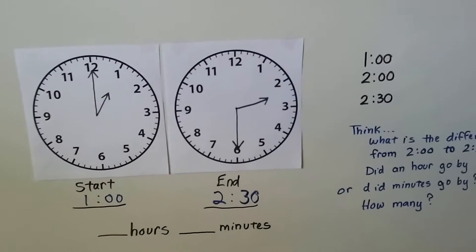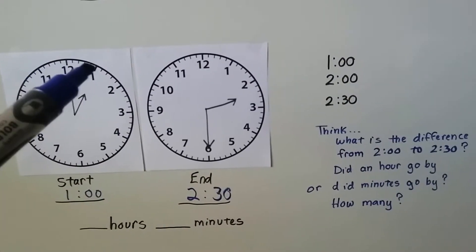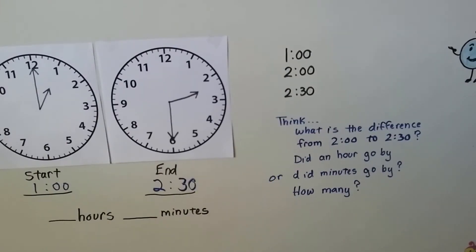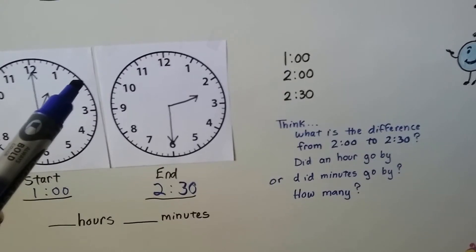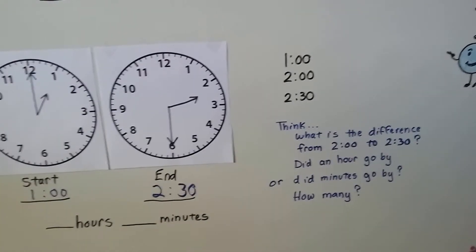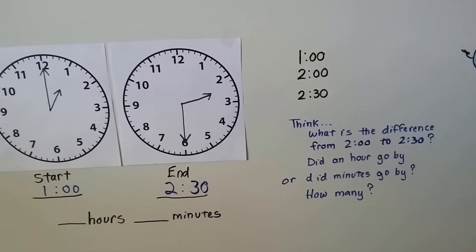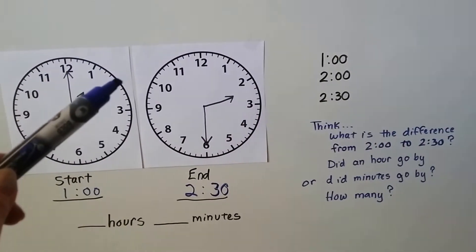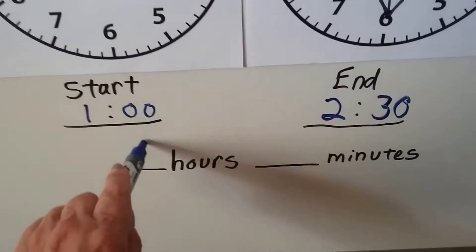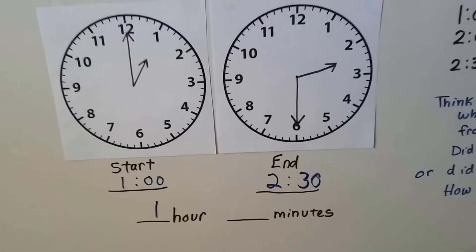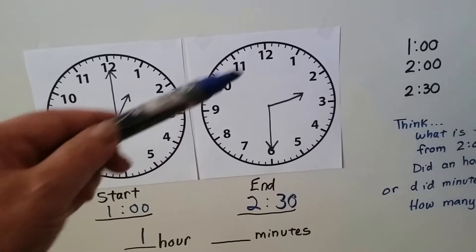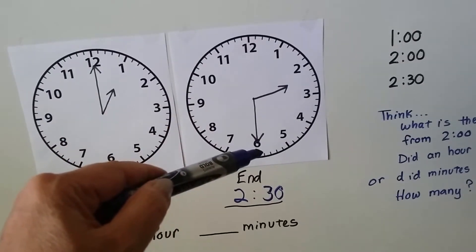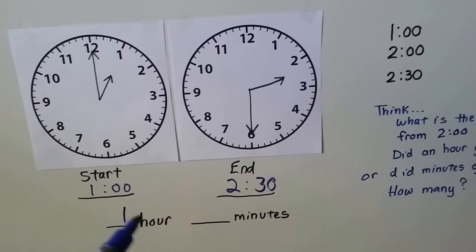How much time has gone by from one o'clock to two-thirty? We hop one hour to two o'clock — so one hour has passed. Now we're at two o'clock, but the end time is two-thirty. If the minute hand was at the twelve at two o'clock, it would take thirty minutes to go down to the six. So the elapsed time is one hour and thirty minutes.